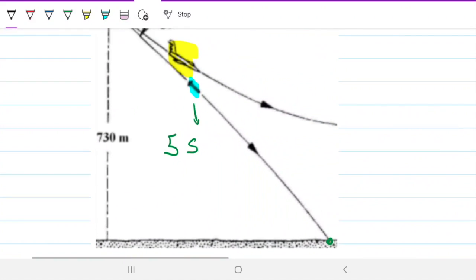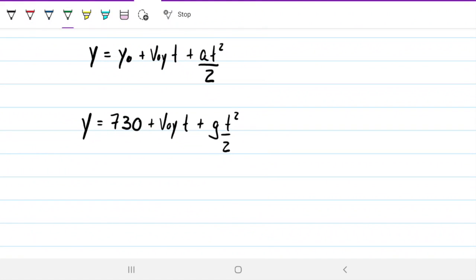So what do we have? What is our Y0? So when time is zero, what's the altitude? 730 meters. What is the velocity? We don't know. That's what we're looking for. So let's just leave it as V0Y t plus acceleration is gravity t squared over 2.